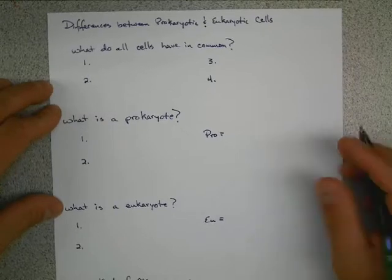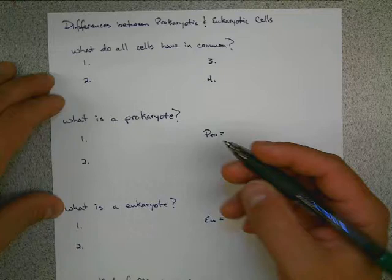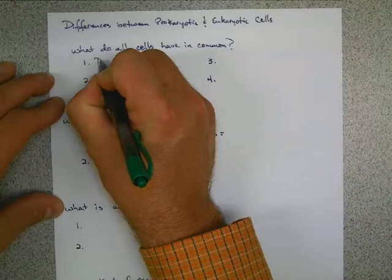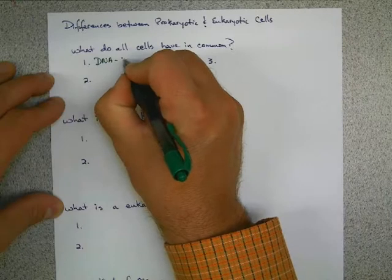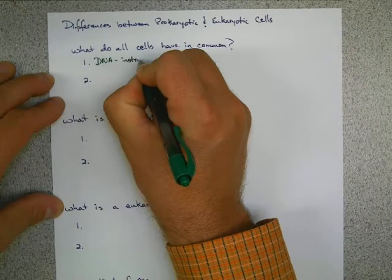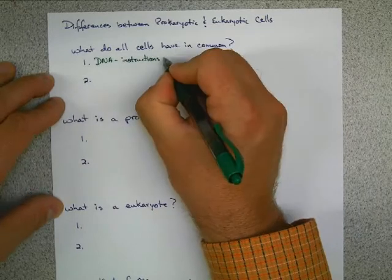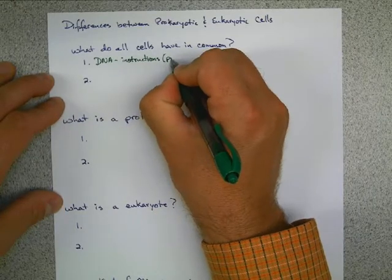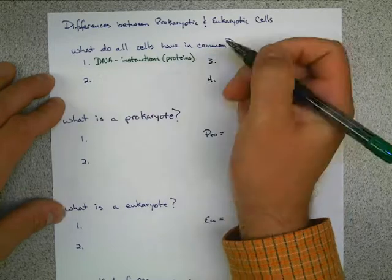So as we begin today, we want to find out what do all cells have in common. Well, number one is they're going to have DNA. And remember, DNA is the instructions for life. It's exactly the instructions for making proteins. Proteins are vital, especially the enzyme version of proteins.